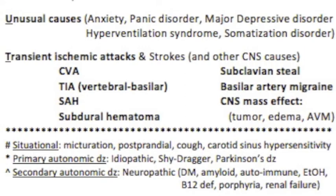U is for Unusual causes — a catch-all including anxiety, panic disorder, major depressive disorder, hyperventilation syndrome, and somatization disorder. T is for Transient Ischemic Attacks, strokes, and CNS causes: CVAs, TIAs, subarachnoid hemorrhage, subdural hematoma, subclavian steal syndrome, basilar artery migraines, and CNS mass effects.